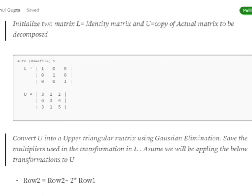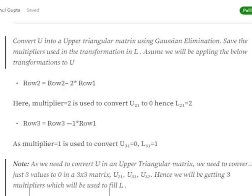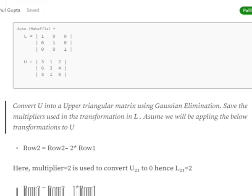Now we convert U into an upper triangular matrix using Gaussian elimination. Below the diagonal are not zero, so we wish to convert the values 6, 3, and 1 to zero. The first operation is R2 = R2 - 2·R1. Since R2 is [6,3,4] and 2 times R1 gives us 6 in the first position, subtracting makes that value become 0.